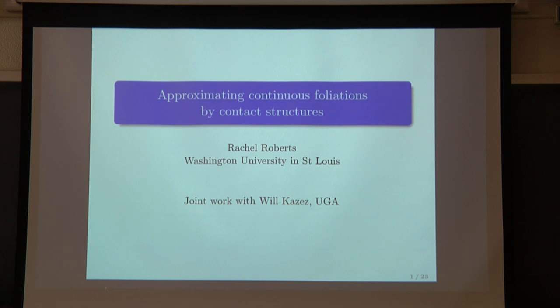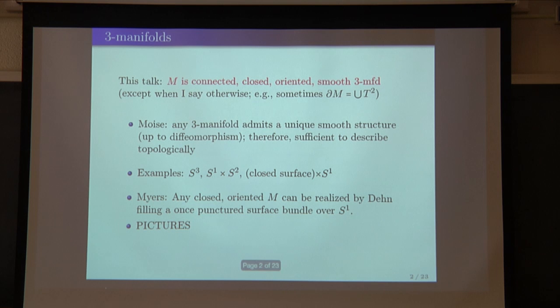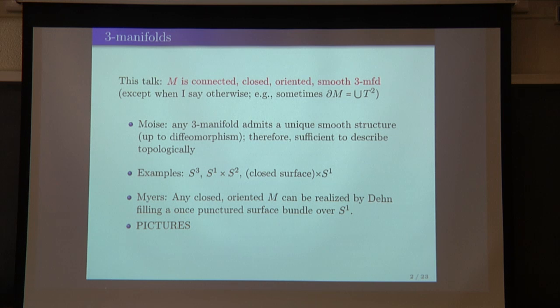We'll be thinking about three-manifolds, and in general when I talk about a manifold, I'm going to be assuming that it's connected, closed, oriented, and smooth — a three-dimensional manifold — except every so often we'll have a non-compact manifold or a manifold with non-empty boundary, but if we have non-empty boundary it's always going to be just a union of tori. Thanks to Moise, we know that any three-manifold admits a unique smooth structure up to diffeomorphism, so it's sufficient to just describe the manifold topologically.